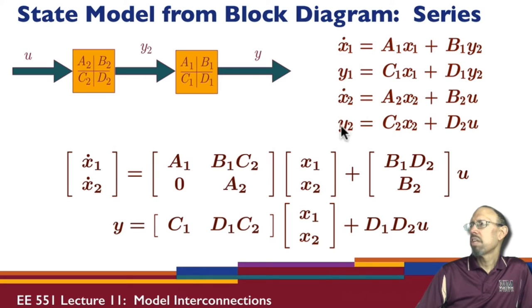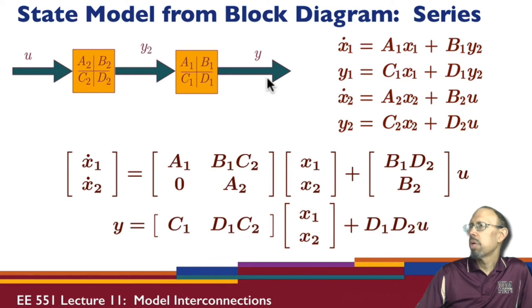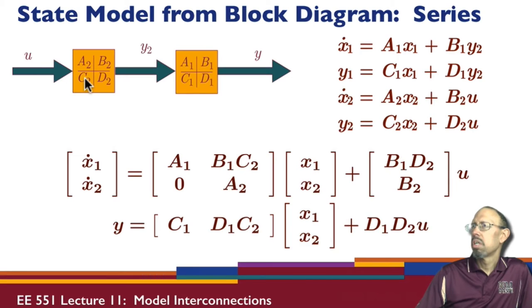Here are the state equations and output equations for the two systems. x1-dot equals A1*x1 plus B1*u — the input here is y2. y1 equals C1*x1 plus D1*y2. For the second system: x2-dot equals A2*x2 plus B2*u, and y2 equals C2*x2 plus D2*u. That's where these equations come from.